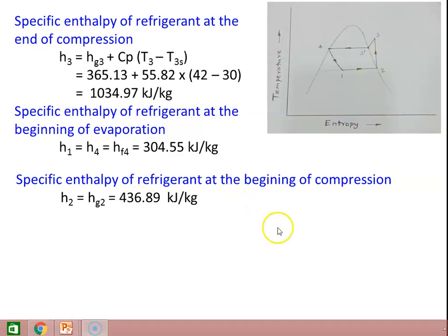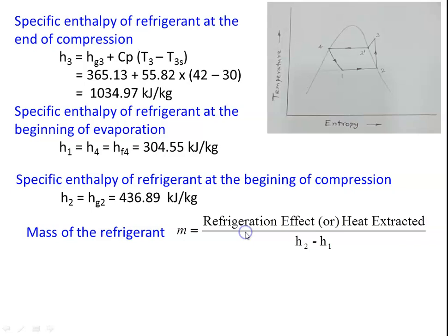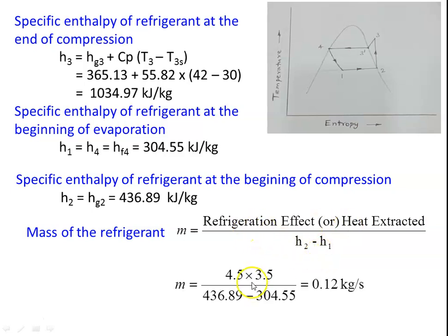Here point 2 is saturated vapor. The mass of the refrigerant M = refrigeration effect / (H2 - H1). The refrigeration effect is 4.5 tons, and 1 ton of refrigeration equals 3.5 kJ/s. So M = (4.5 × 3.5) / (436.89 - 304.55) = 0.12 kg/s. The mass of the refrigerant flowing through the circuit is 0.12 kg/s.